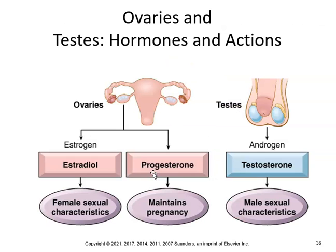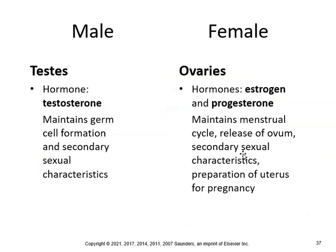Ovaries — you should know where that is. Estradiol and progesterone are part of the ovaries. Testosterone is part of the testes. The male testes hormone is testosterone, which maintains germ cell formation and secondary sexual characteristics. The ovaries produce estrogen and progesterone, which maintain the menstrual cycle, release of the ovum, secondary sexual characteristics, and preparation of the uterus for pregnancy.